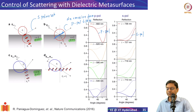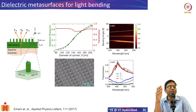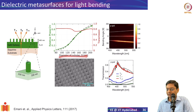The third example is beam bending with dielectric metasurfaces. Instead of exploiting resonance to introduce phase as in plasmonic metasurfaces, we can introduce a phase gradient by letting light propagate along a nanowire or pillar. By changing the diameter of a high-index pillar sitting on a surface, we introduce different amounts of phase. A calculation shows that as diameter increases, the phase changes from 0 to 2π for a fixed pillar height of 460 nm.